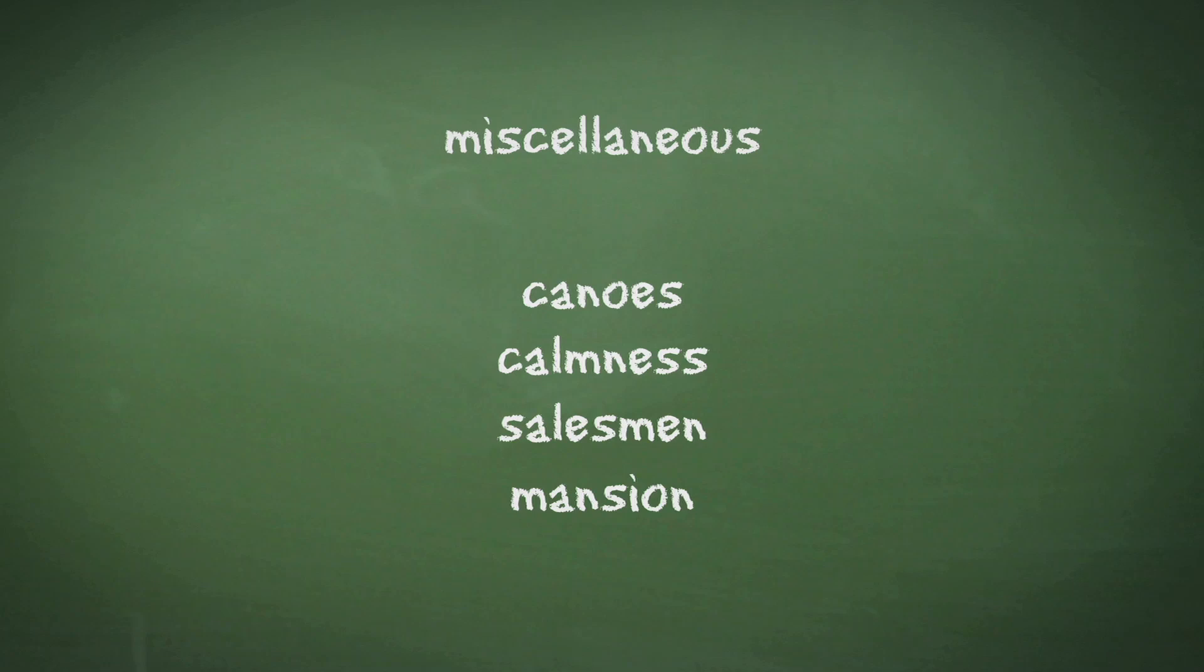In this example we begin with canoes. Start with the first letter and tick off each letter that appears in miscellaneous. You would look for the C and notice it appears. To begin with, you might find it helpful to tick off the letters one by one.